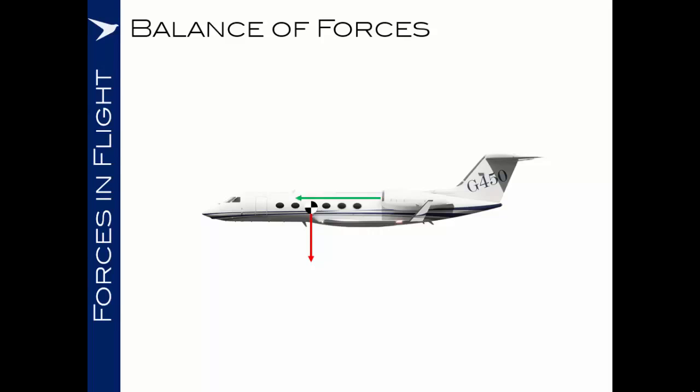Equally, we assume that the thrust vector generated by the engines will act from the position of the engines in a forward direction. Depending on where the engines are mounted on the airframe will depend on the moment that this generates. In this case, we have engines mounted slightly above but quite close to the center of gravity of the aircraft. Therefore, as we apply full power we may experience a very slight nose-down moment, but I wouldn't expect this in this particular example to be particularly marked.